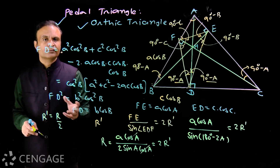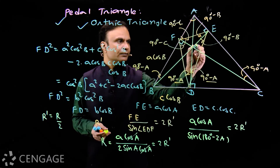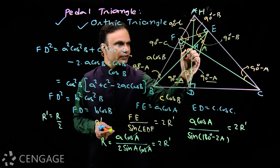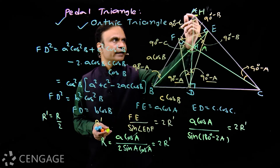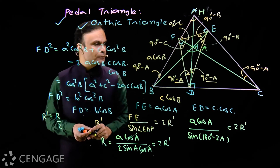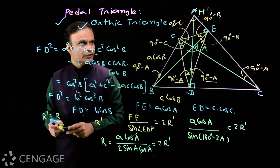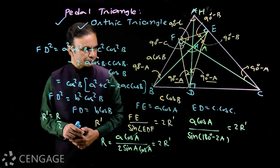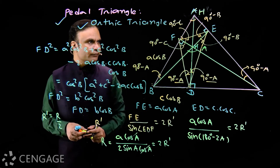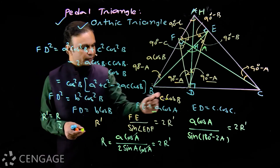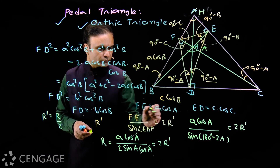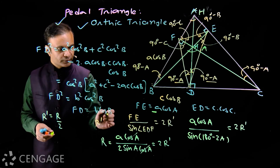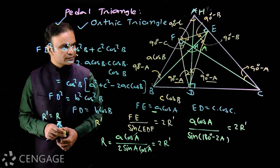These results were for an acute angle triangle. Now suppose triangle ABC is obtuse with angle A being obtuse. The orthocenter H lies outside the triangle. DEF is still the pedal or orthic triangle, with D, E, F as feet of perpendiculars from the orthocenter on the sides. In this case, FE = −a·cos A because angle A is obtuse and cos A is negative. Sides FD = b·cos B and ED = c·cos C remain the same since angles B and C are acute.